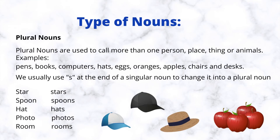Plural nouns are used to call more than one person, place, thing, or animals. Examples: pens, books, computers, hats, eggs, oranges, apples, chairs, and desks. We usually use s at the end of a singular noun to change it into a plural noun.